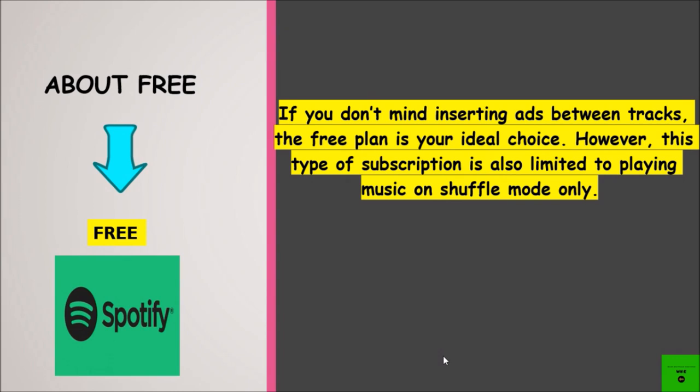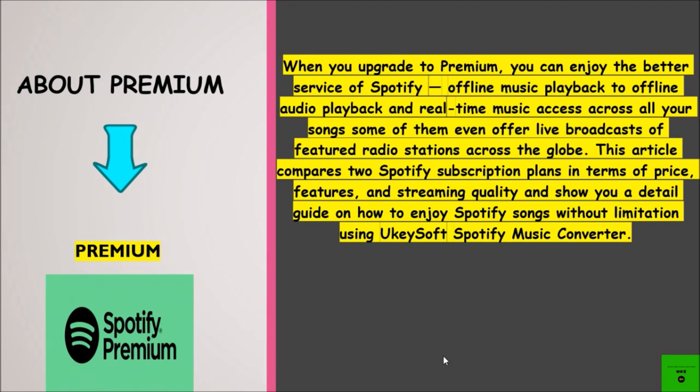Let's talk about a free account. If you don't mind inserting ads between tracks, the free plan is your ideal choice. However, this type of subscription is also limited to playing music on shuffle mode only. When you upgrade to premium, you can enjoy better service from Spotify, offline audio playback, and real-time music access across all your songs.